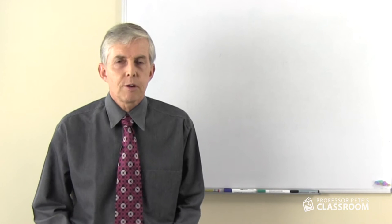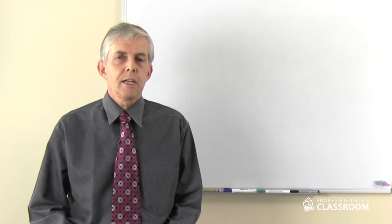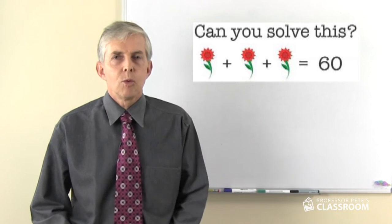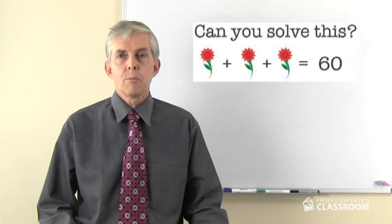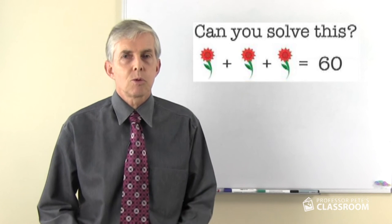So let's have a closer look, there are four lines to the question, let's look at it in order. Line one, we can see three red flowers are equal to 60, so clearly each flower according to this system within the puzzle, each flower must be worth 20.